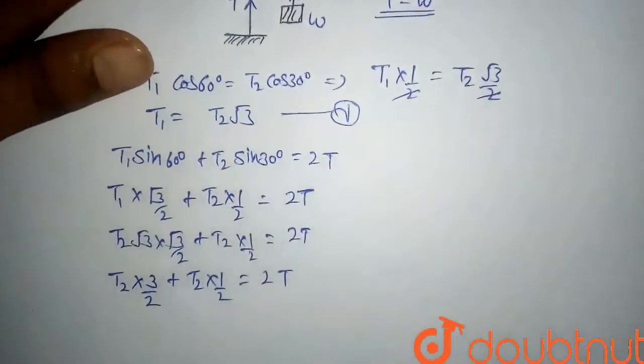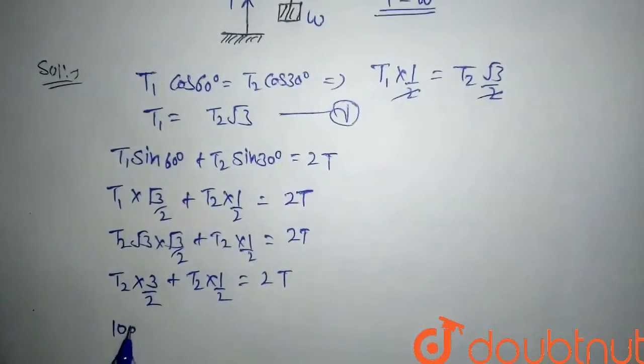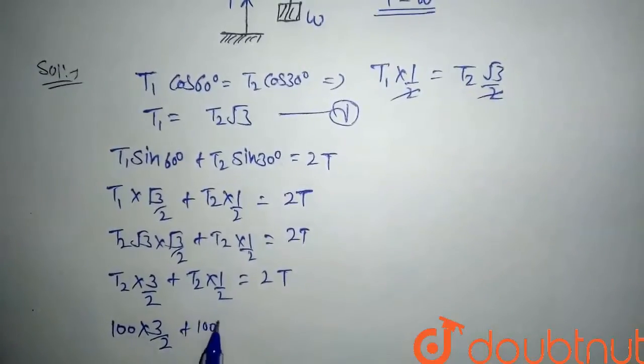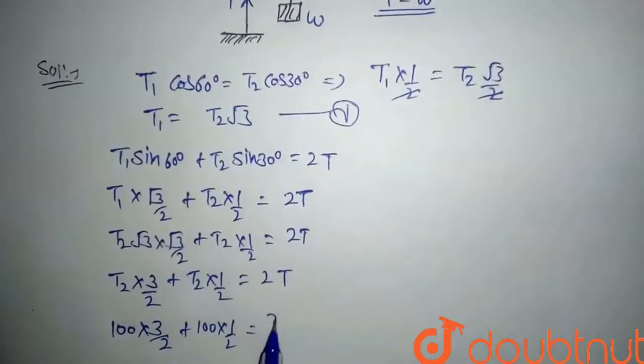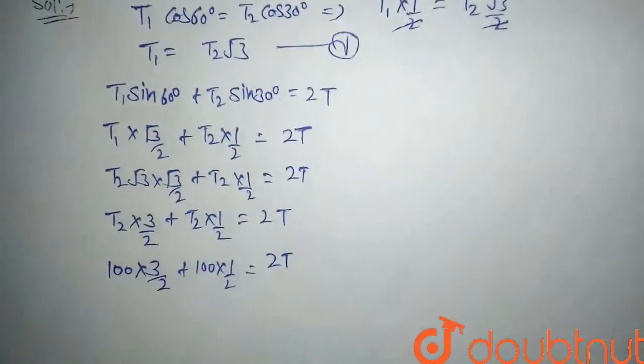So here if we solve, we will get 2T. So here 100 times 3/2 plus 100 times 1/2 equals 2T.